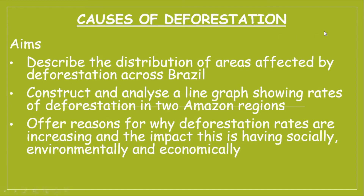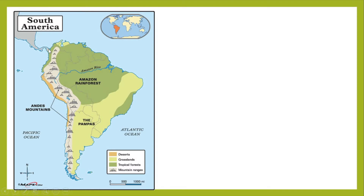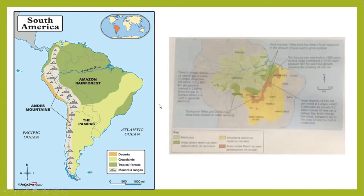First, a reminder of where we're talking about so you can visualize what we're referencing. We have the continent of South America - you drew this sketch map last lesson. The green area is the Amazon rainforest, and underneath you have Brazil, Peru, Venezuela and lots of other countries. The next image is a little bit difficult to make out, but this boundary here is the Amazon rainforest region - this light green area from the key says rainforest.